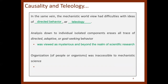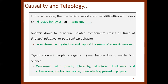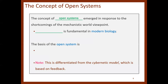Organization of people or organisms were inaccessible to mechanistic science, which was concerned with growth, hierarchy, structure, dominance, and control — none of which appear in physics. The concept of open systems emerged in response to these shortcomings. Open systems is fundamental in modern biology. The basis of open systems is dynamic interactions of its components, differentiated from the cybernetic model which is based on feedback.